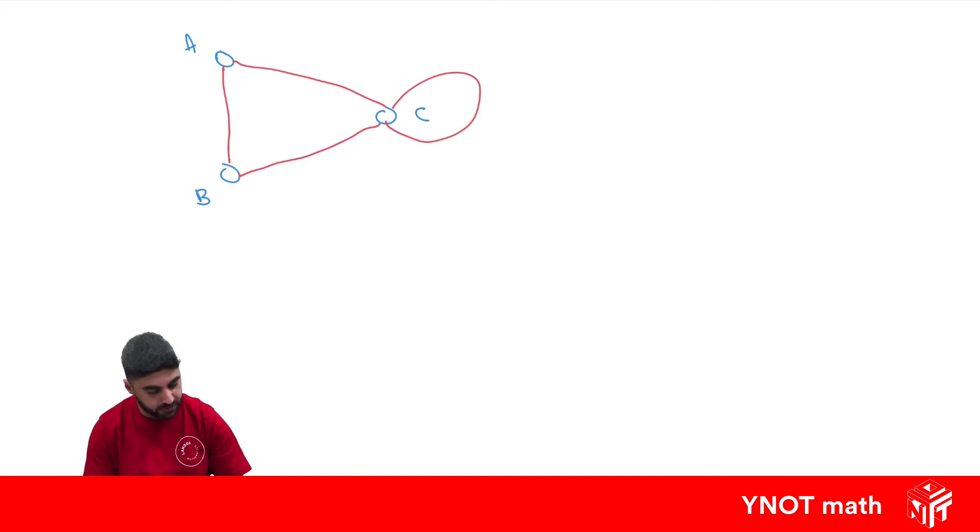Some things we have to know: the points here are called vertices, and the lines are called edges. Here we have a loop in the network.